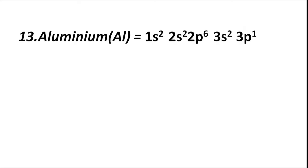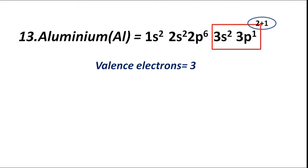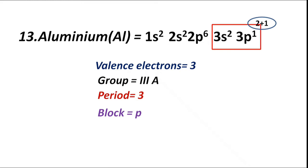Atomic number 13, aluminium (Al), has electronic configuration 1s2 2s2 2p6 3s2 3p1. The valence shell is M. Total valence electrons in 3s2 and 3p1 sub-shells are 2 plus 1, equal to 3. Hence group IIIA or 3A, period 3. Highest coefficient is 3, therefore period third. Block P — valence electrons fill the p sub-shell. Valency is 3.